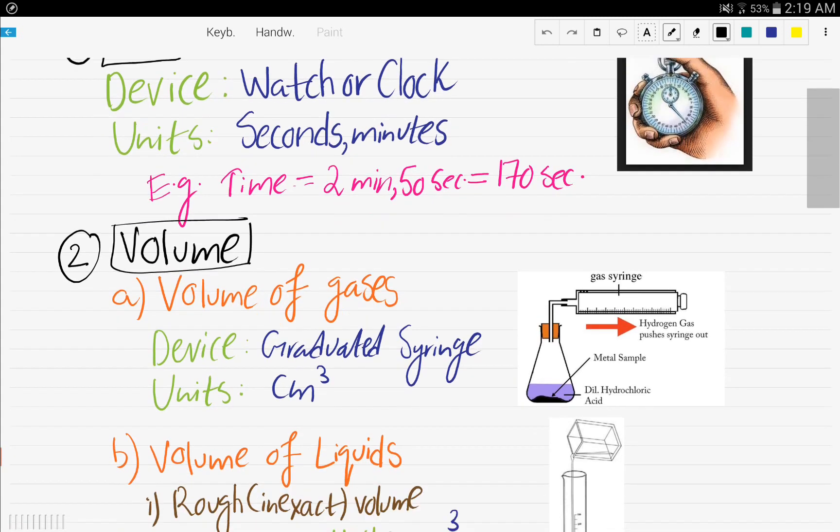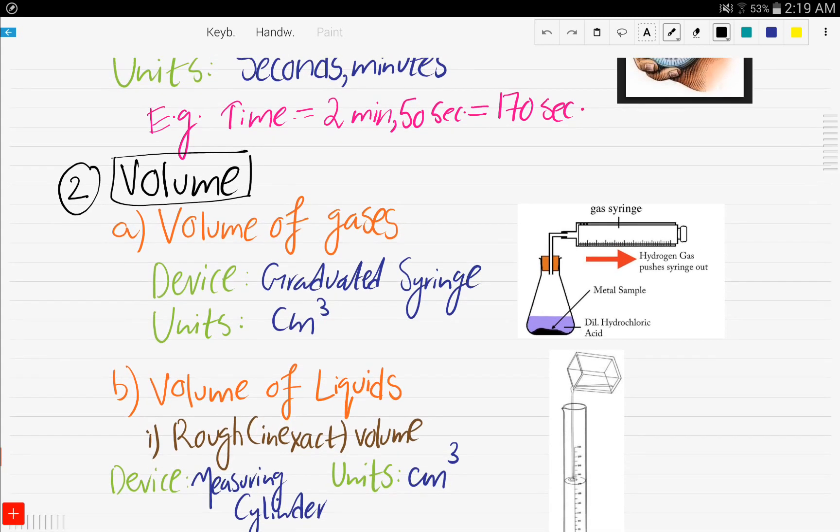Then now we come to measuring the volume. So it's two parts. If you want to find the volume of a gas, use the graduated syringe and the unit is centimeter cubed.